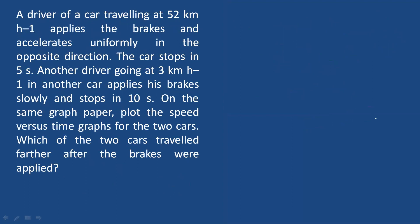A driver of a car traveling at 52 km per hour applies the brake and accelerates uniformly in the opposite direction. The car stops in 5 seconds. Another driver, going at 3 km per hour in another car, applies his brake slowly and stops in 10 seconds. On the same graph paper, plot the speed versus time graph for the two cars. Which of the two cars traveled farther after the brakes were applied?